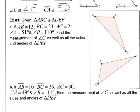So now let's do this as an actual problem. It gives us a bunch of information and says find the measurements of angle C as well as the sides and angles of triangle DEF. We start off saying these two triangles are congruent. The order matters: since it says ABC and DEF, A corresponds to D, B corresponds to E, and C corresponds to F.